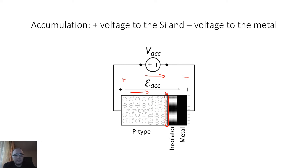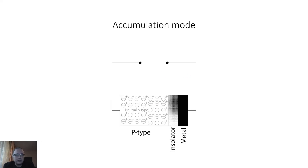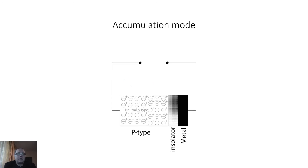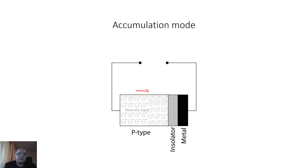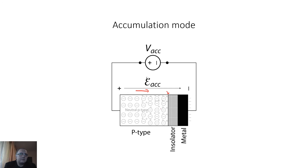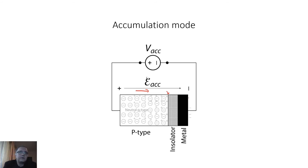Here is a short animation for the accumulation mode. We apply the external field, which exercises a drift force on the holes in this direction, and the holes move to be stopped at the interface with the oxide. You can see that on this side we have positive charges and on the other side we have negative charges, and they balance each other across the insulator.